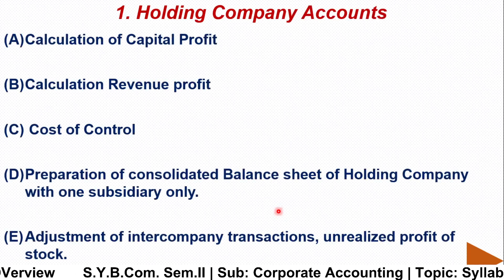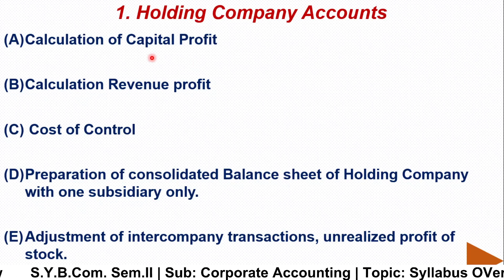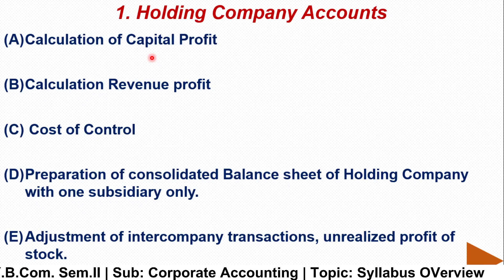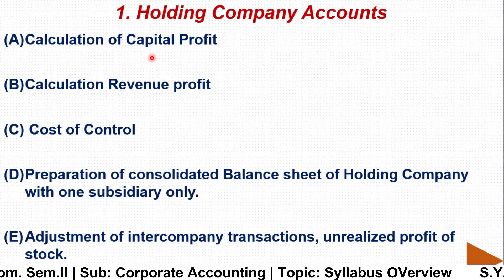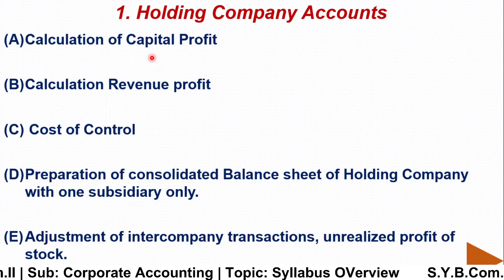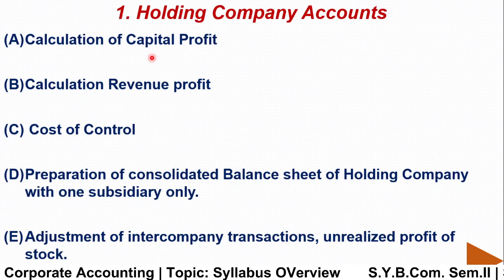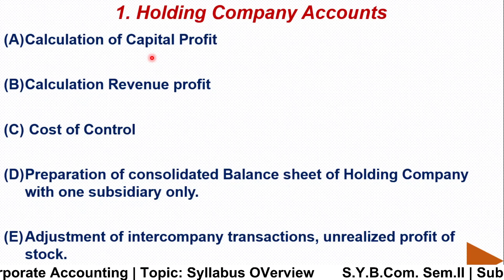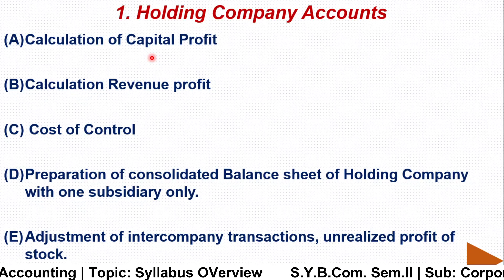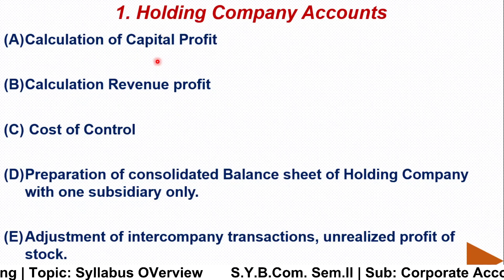In Chapter 1, Holding Company Accounts, we study the calculation of capital profit and revenue profit. For example, if Company A is the holding company and Company B is the subsidiary, and A holds at least 51% shares of B, then A is the holding company and B is the subsidiary. The date of acquisition is important: profit before that date is capital profit, and profit after that date is revenue profit.